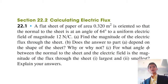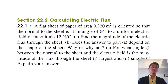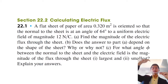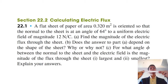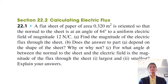A flat sheet of paper of area 0.320 square meters is oriented so that the normal to the sheet is at an angle of 64 degrees to a uniform electric field of magnitude 12 newtons per coulomb. Consider that this is the sheet of paper, and the normal to the sheet and the electric field is at an angle of 64 degrees. Find the magnitude of the electric flux through the sheet. Does the answer depend on the shape of the sheet? For what angle phi will flux be minimum or maximum?